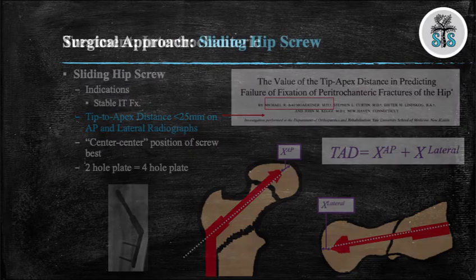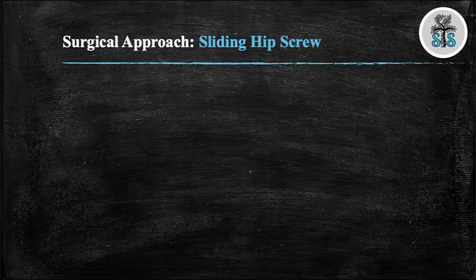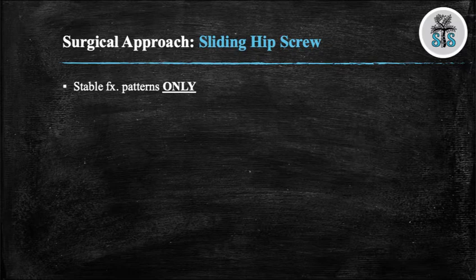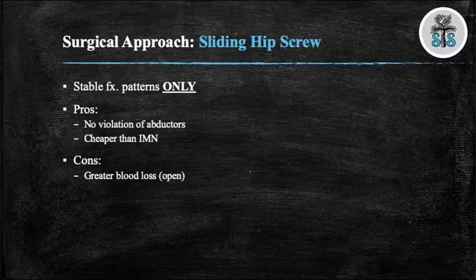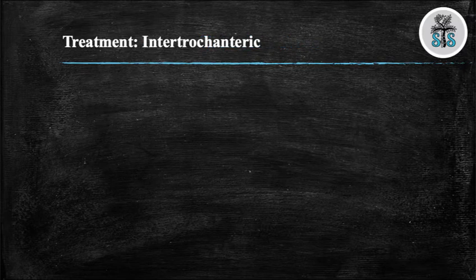Sliding hip screws can only be used in stable IT fractures. An advantage is that you don't violate the abductors and the implant is less expensive than a cephalomedullary nail. A disadvantage is that it is open and can cause greater blood loss.